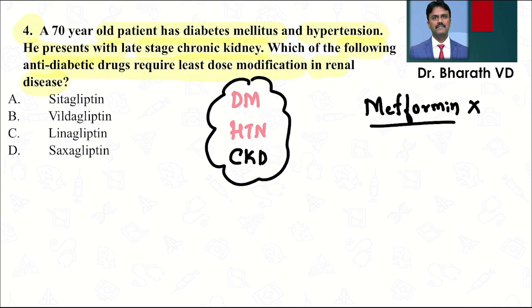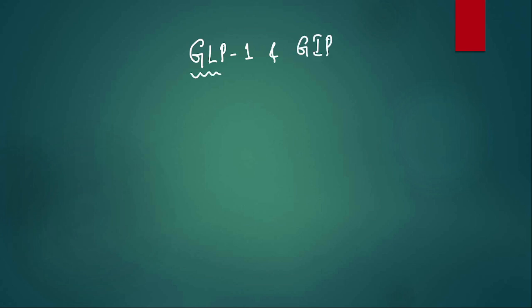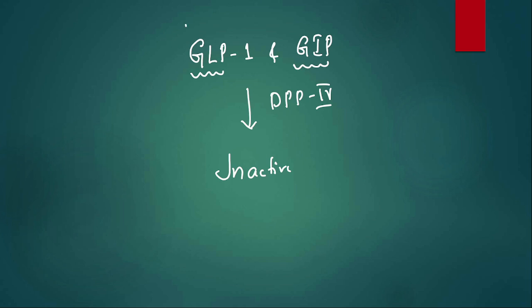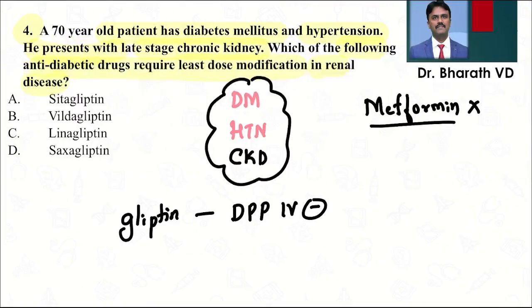The other drugs in the options are gliptins — DPP-4 inhibitors. There are incretin substances called GLP-1 (glucagon-like peptide 1) and GIP (glucose-dependent insulinotropic polypeptide). These are made inactive by the enzyme dipeptidyl peptidase-4. By inhibiting DPP-4, levels of GLP-1 and GIP increase, which decrease glucagon, slow gastric emptying, and stimulate satiety — all helpful in diabetics.